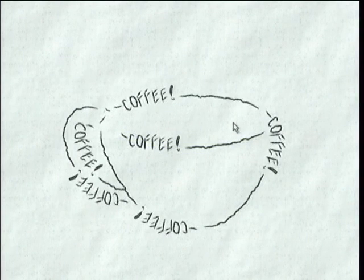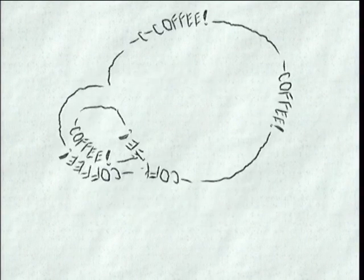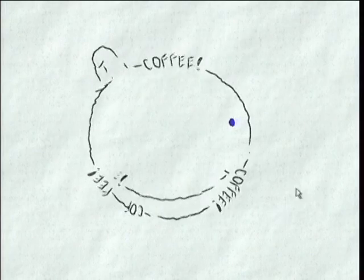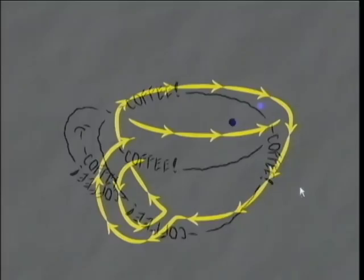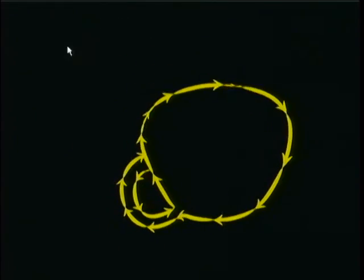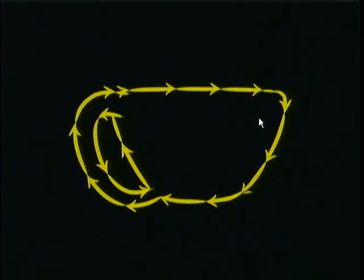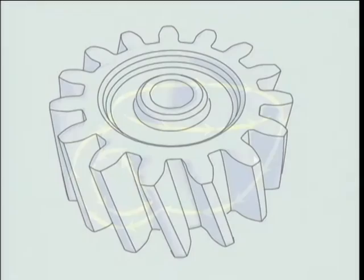The system attempts to maintain temporal coherence for silhouettes. Notice the difference with silhouette tracking turned off, and then turned back on. We annotate creases in a similar way.